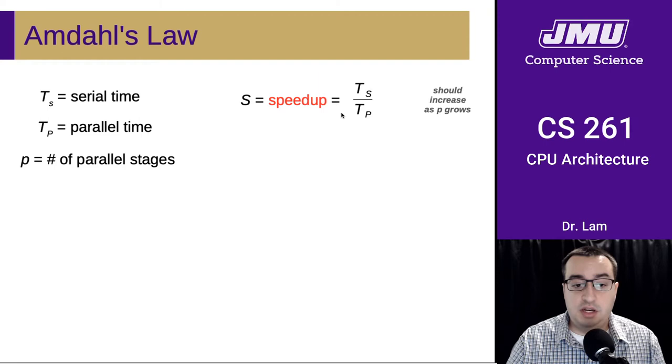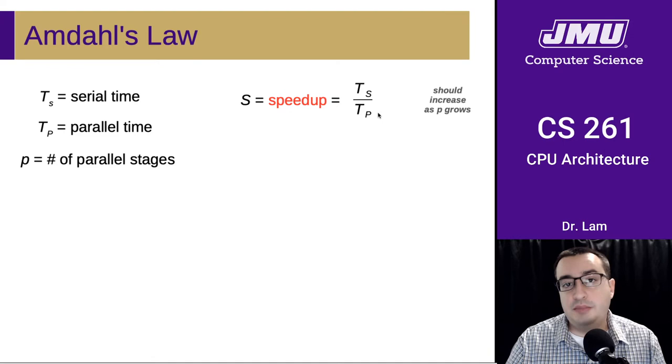So how many things can be in flight at the same time? The speedup then is going to be the serial time divided by the parallel time. And if you think about this, this quantity should increase as we increase the number of parallel stages.